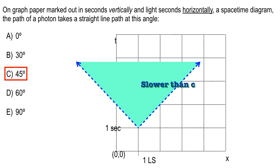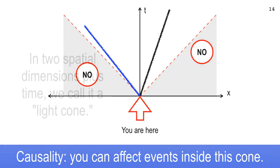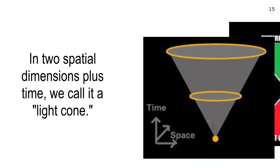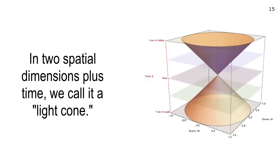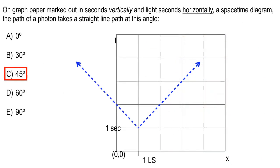The visible universe — everything we can see — is within our past light cone. Someone at Alpha Centauri has a different light cone. If a distant galaxy's light takes 10,000 years to reach us, we can't see anything from that galaxy until 10,000 years have passed — meaning its light cone doesn't intersect ours until way up the time axis. The only things you can ever observe or affect are in your causal past or causal future.